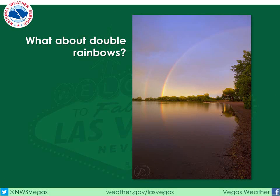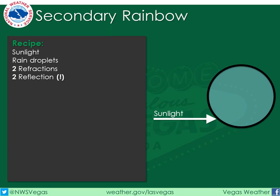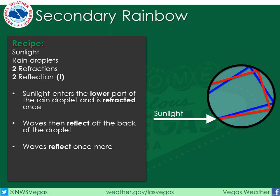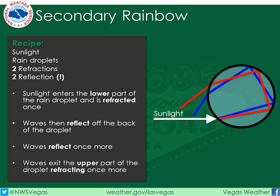So what about double rainbows? Why are they less vibrant, and why are their colors reversed? Here's the recipe for creating a double, or secondary, rainbow. Once again you need sunlight, raindrops, and two refractions — but with the secondary rainbow, you need a second reflection. This time, the sunlight enters through the lower part of the rain droplet and is refracted. The waves then reflect not just once, but twice off the back of the droplet. Finally, the wave exits from the upper part of the droplet, refracting once more.